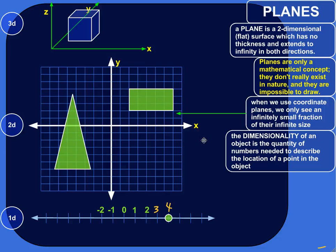A plane is a two-dimensional surface which extends infinitely in both directions. I want to explore what it means for it to be two-dimensional, and what it means for objects on a plane to be two-dimensional. So let's look at this idea of dimensionality.